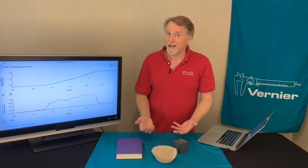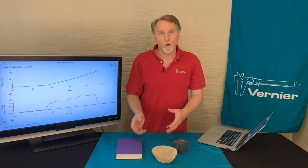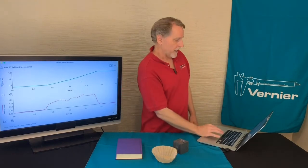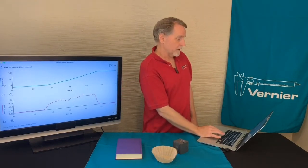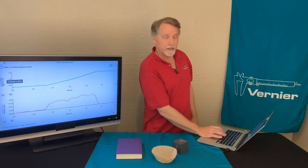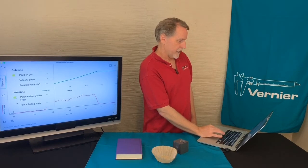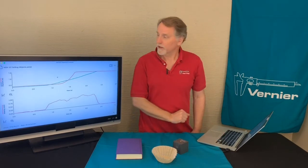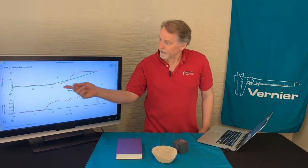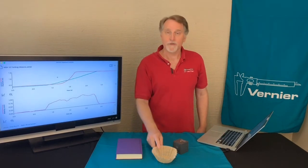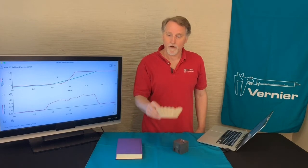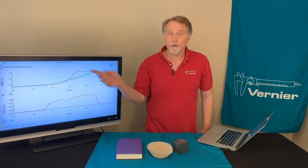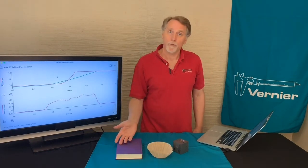Now suppose we want to compare the coffee filter to the book. I can click on the label of the position axis and also view the data set for the falling book. The blue line is the coffee filter and the other curve is the falling book.